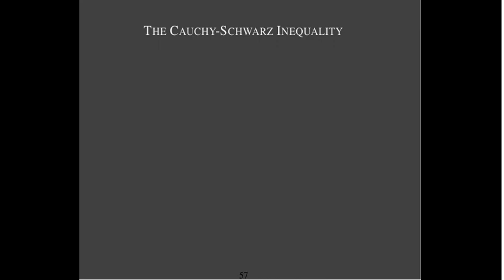Our first inequality is called the Cauchy-Schwarz inequality, named in honor of two mathematicians, Cauchy and Schwarz. It really comes down to the fact that cosine of theta varies between negative one and one. We can write that in more compact form by saying that the absolute value of cosine of theta is less than or equal to one. So let's start with our dot product formula that u dotted with v is the length of u times the length of v times cosine theta.